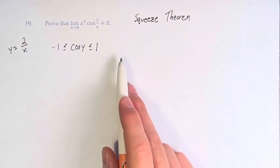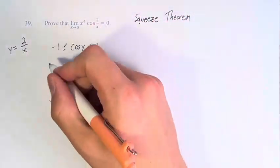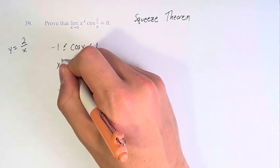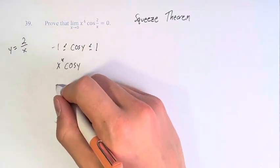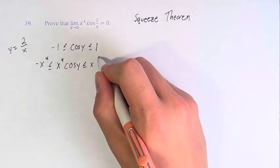Therefore, if we multiply all these values by x to the fourth, we get negative x to the fourth is less than or equal to cosine y times x to the fourth, which is less than or equal to x to the fourth.